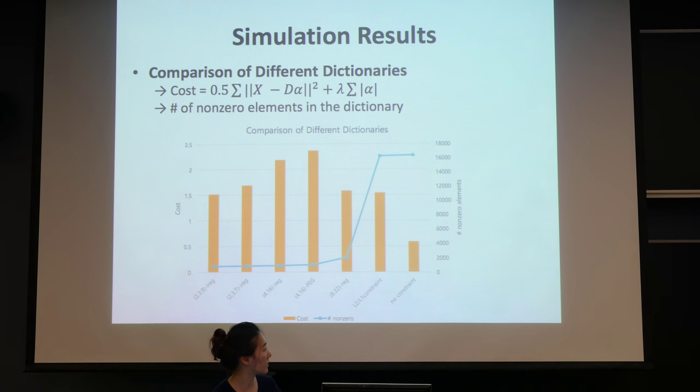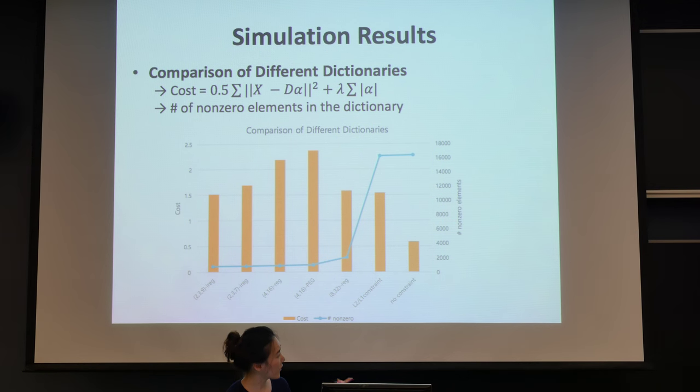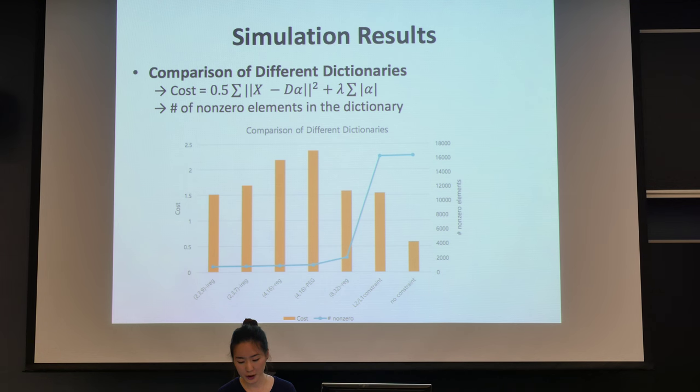We also did some comparison of different dictionaries. The first five results are from our own methods, and the last few methods are the results obtained from the existing methods. The bars here represent the cost function, which measures the difference between the original signal and reconstructed signal. And the blue line here represents the number of non-zero elements in the matrix.